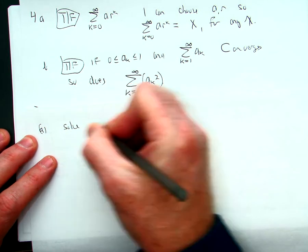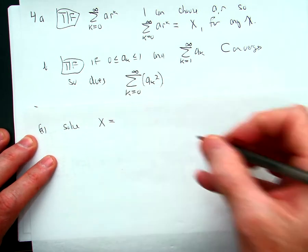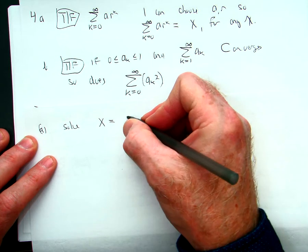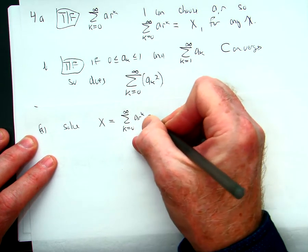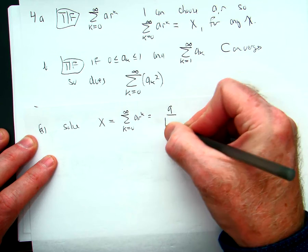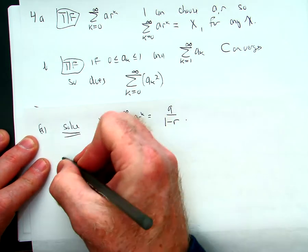Which is equal to a over one minus r. So if x is positive, then I'm going to let a equals one.